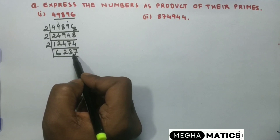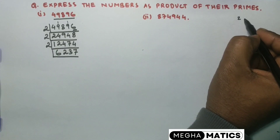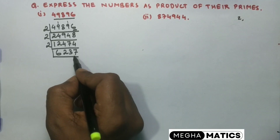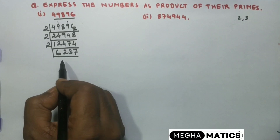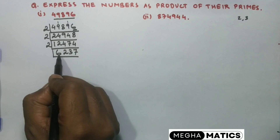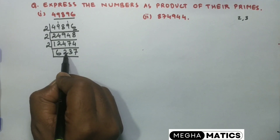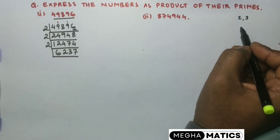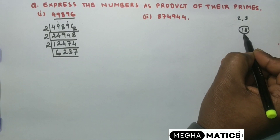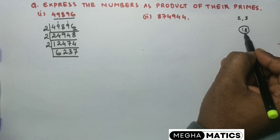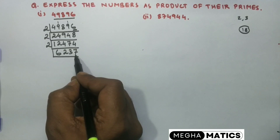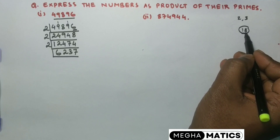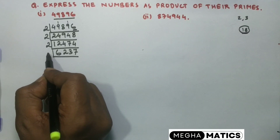We move to the next prime number. The first prime is 2 — we've already done that. This number is not divisible by 2, so we try the next prime, which is 3. To check divisibility by 3, we add all the digits: 6, then 6 and 2 is 8, then 8 and 3 is 11, and 11 and 7 is 18. Since 18 is divisible by 3, the number 6,237 is also divisible by 3.